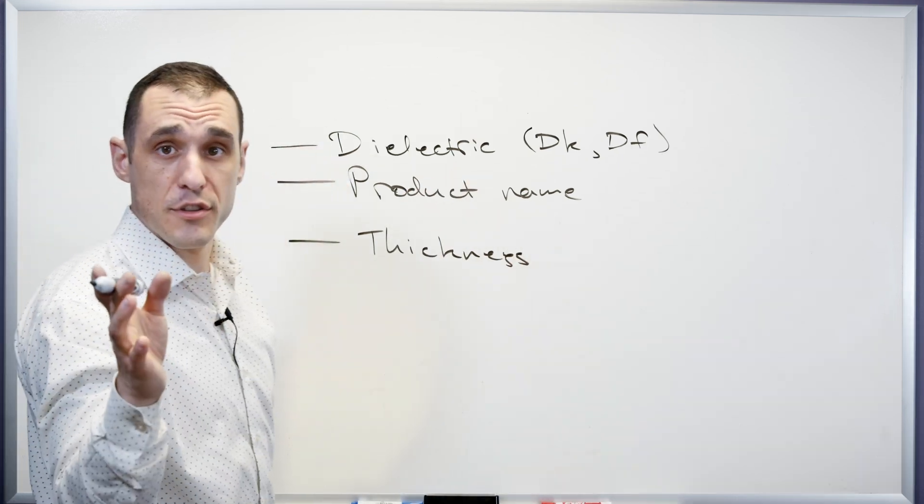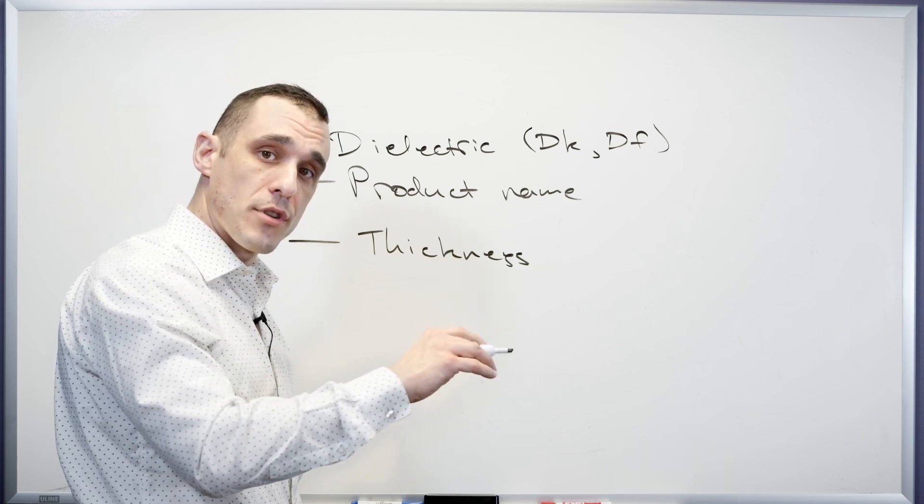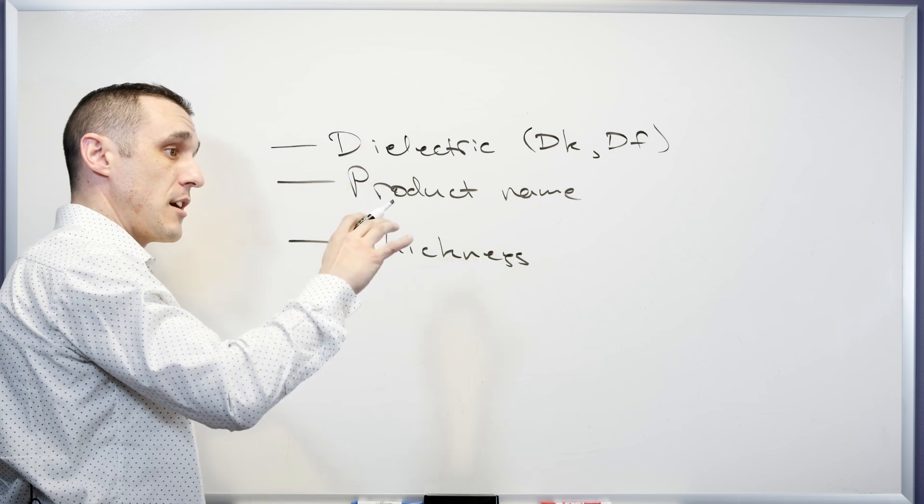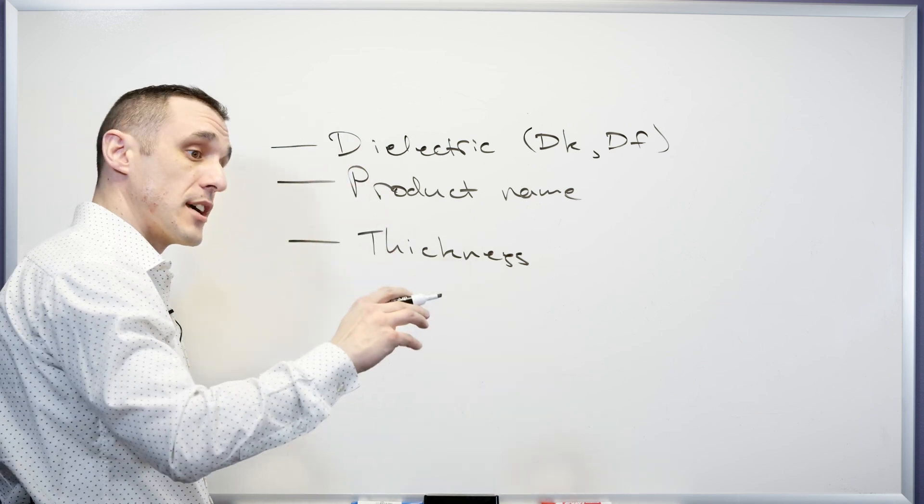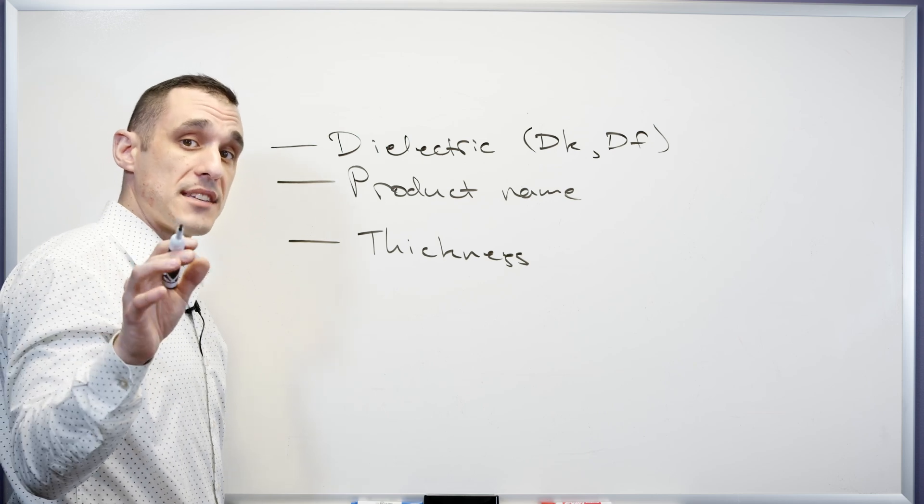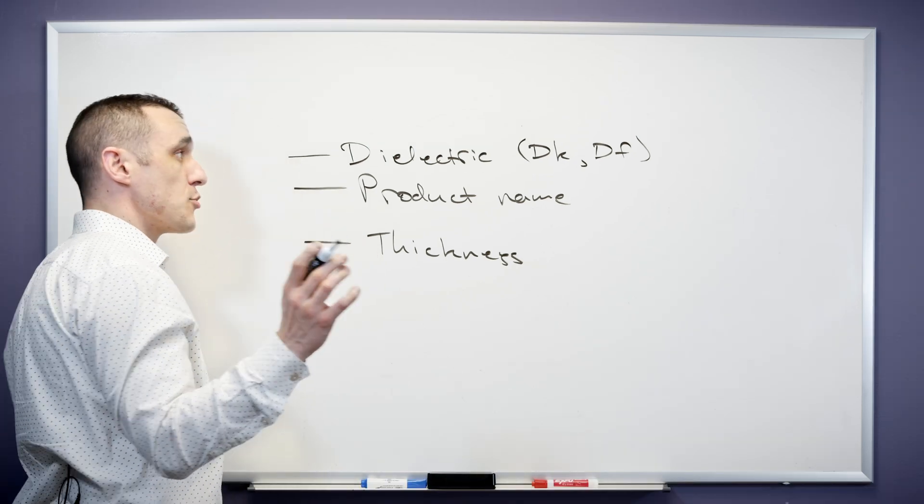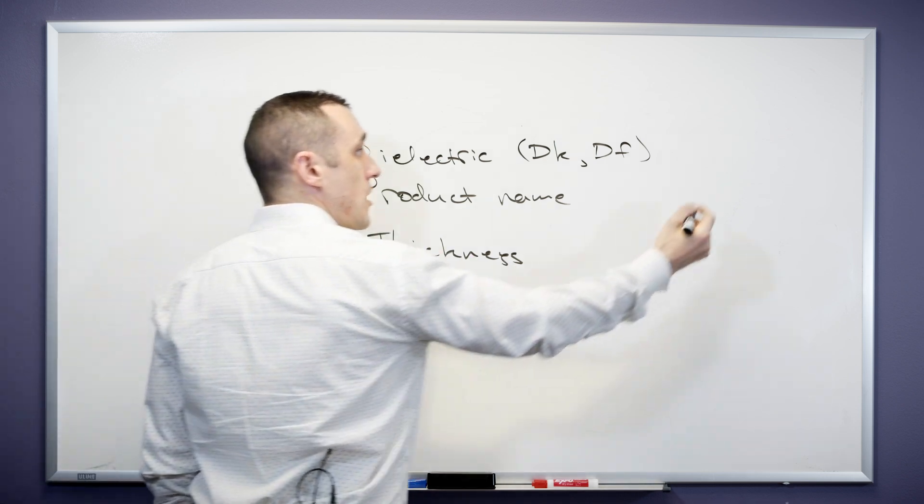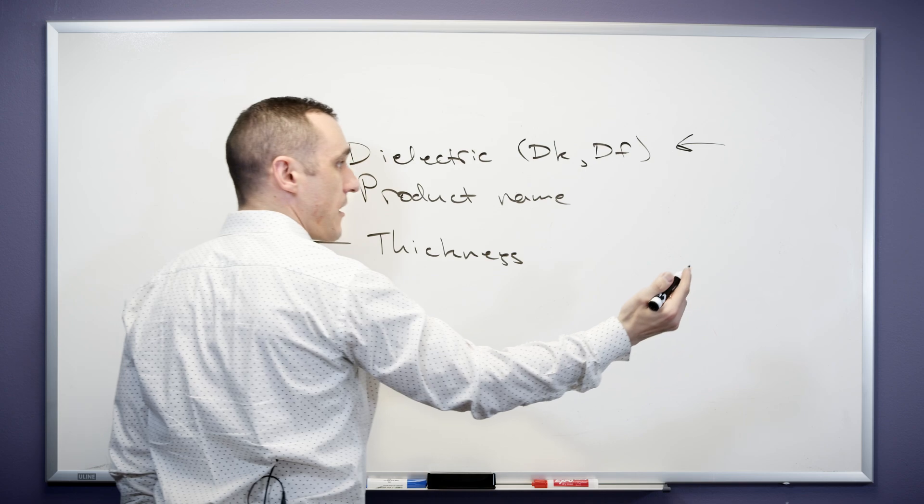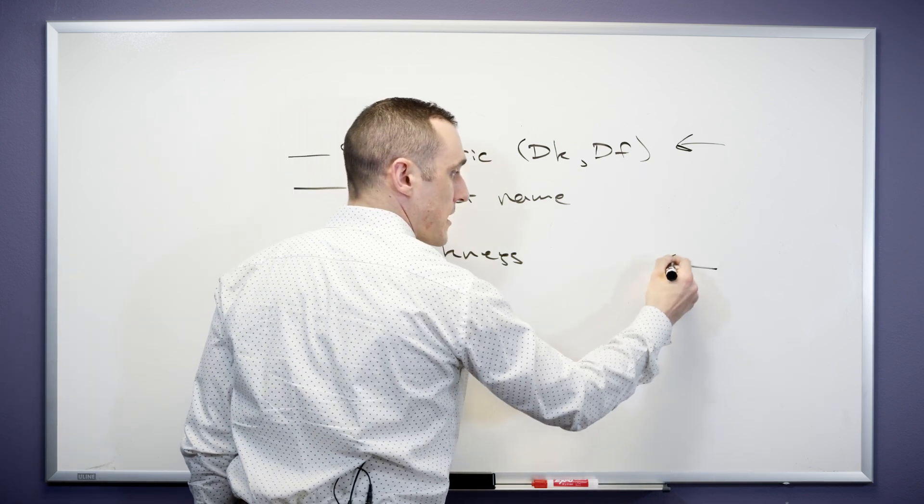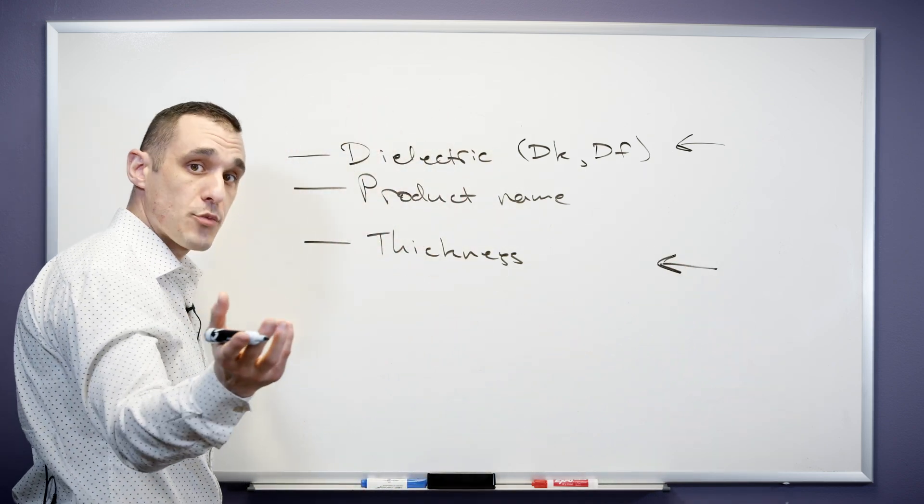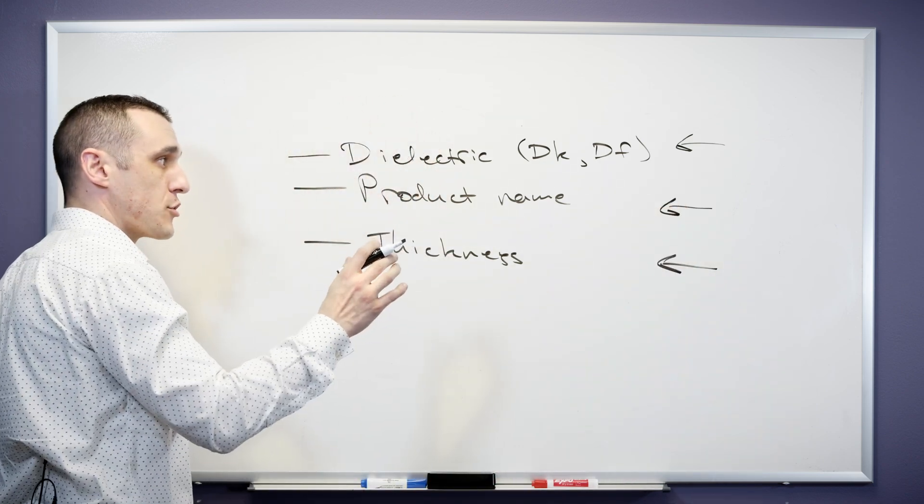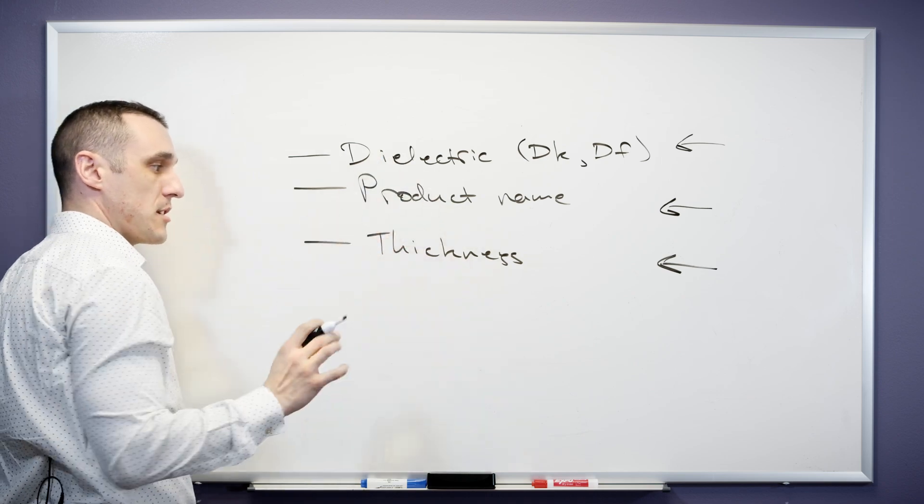The thickness and the DK and the product name all have to match up. In other videos, especially one on dielectrics, you have seen me show an example of a core and prepreg data table from Isola. These sheets will give you the specific constructions that show a particular DK value and a particular thickness and even things like the glass weave alongside the product name. This tells your manufacturer exactly what you want to put into the stack-up.